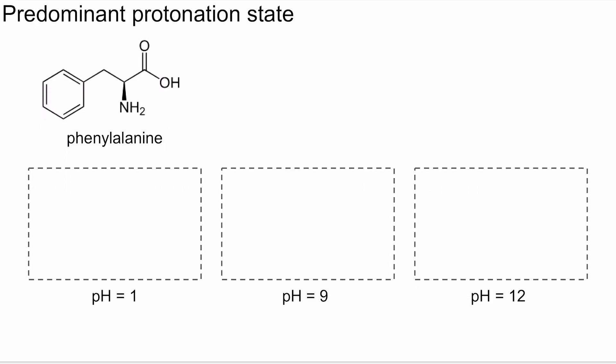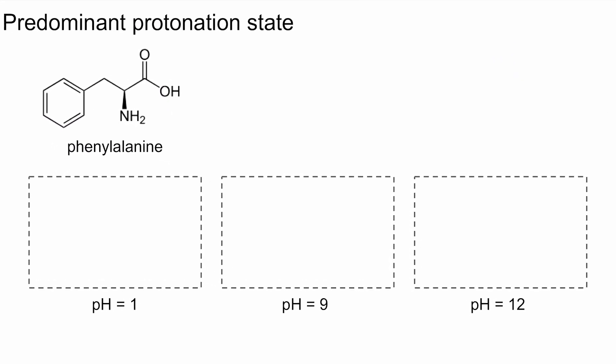All right, let's apply our knowledge on an example. Let's say we have this amino acid phenylalanine, and we want to look at the functional groups and whether they would be protonated or deprotonated at certain pH levels. Let's start by first identifying the functional groups. Right here, I see our good friend carboxylic acid, and then here I see an amine.